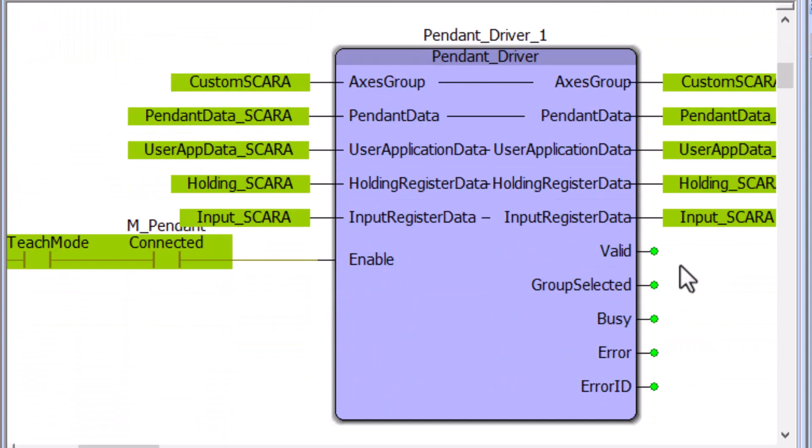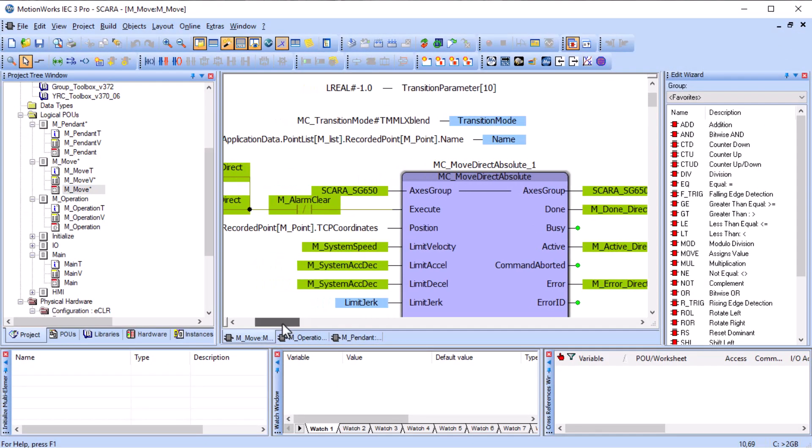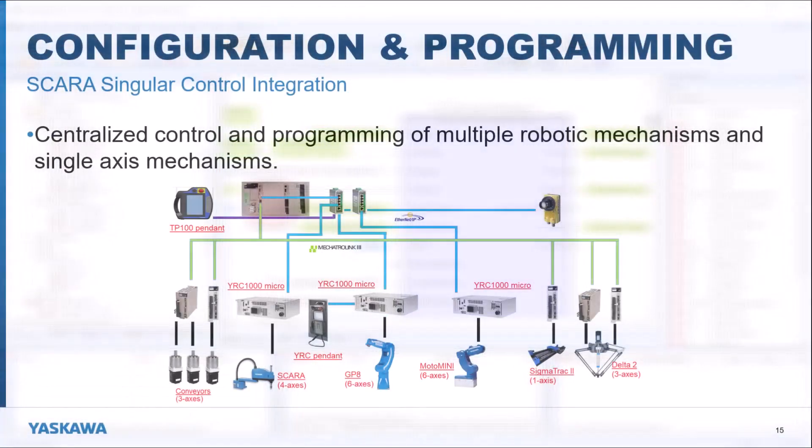Same can be achieved in custom SCARA with a similar function block. Motion sequences are produced with the same blocks from PLCOPEN, such as MCMoveDirect and MCMoveLinear, just the same as they are for all multi-axis mechanisms. This programming strategy allows centralized control of multiple robotic mechanisms in one programming language on a single machine controller.